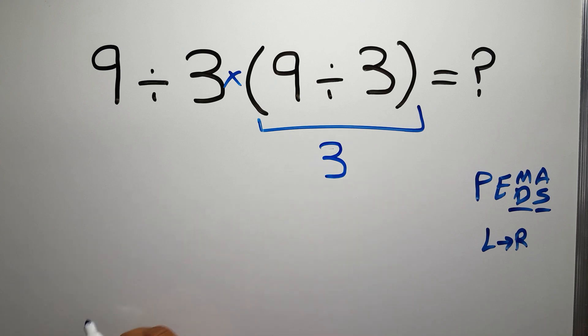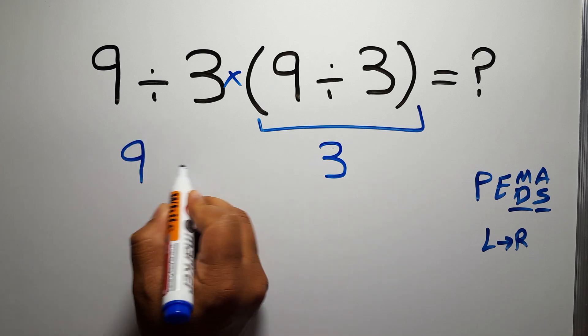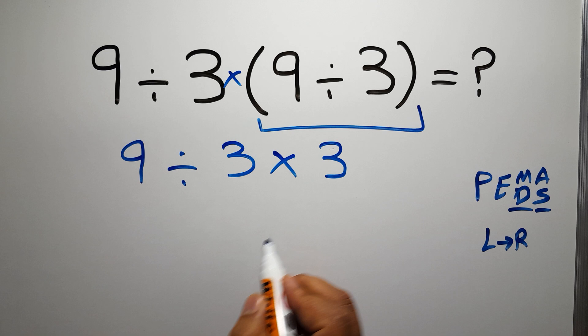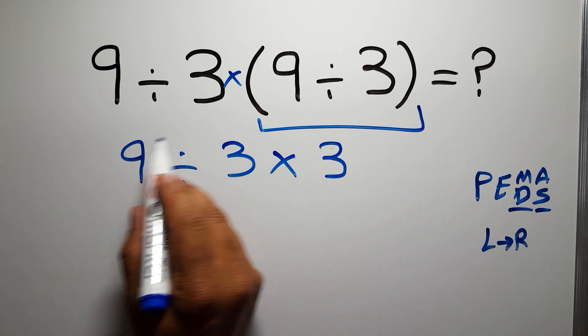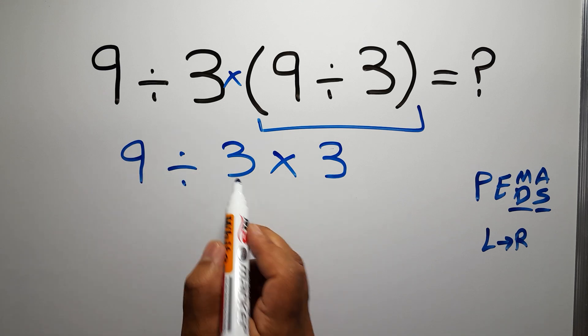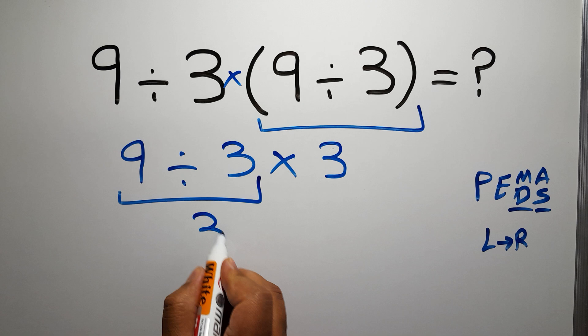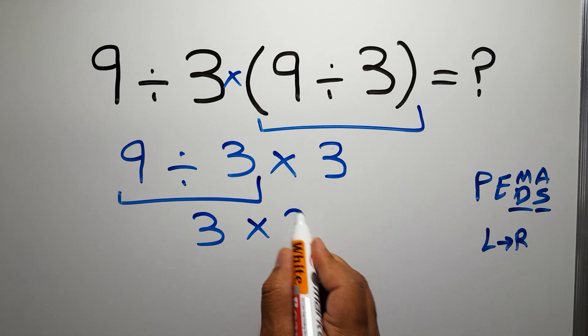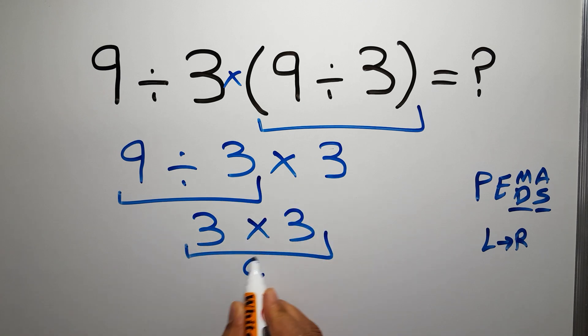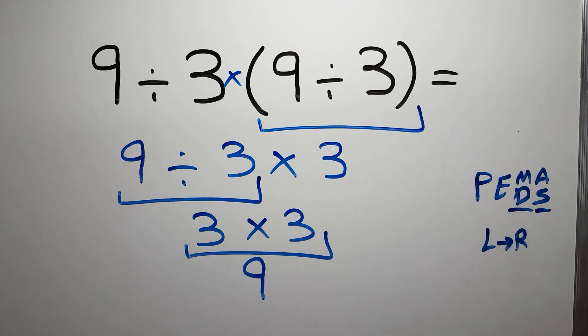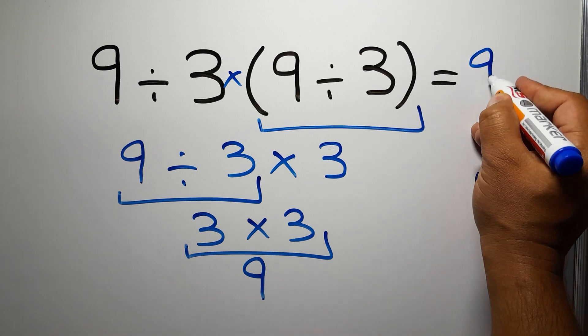Inside this parentheses we have 9 divided by 3 times 3. We have to work from left to right. 9 divided by 3 gives us 3, and 3 times 3 gives us 9. And this is our final answer to this problem. The correct answer is 9.